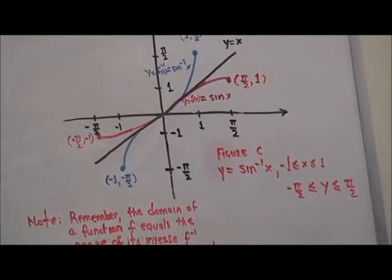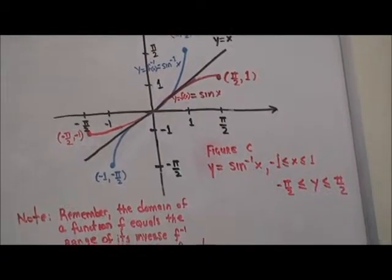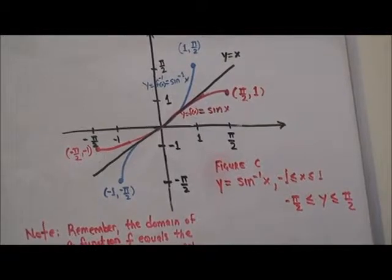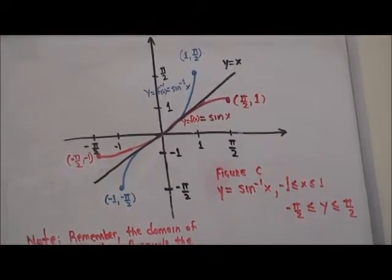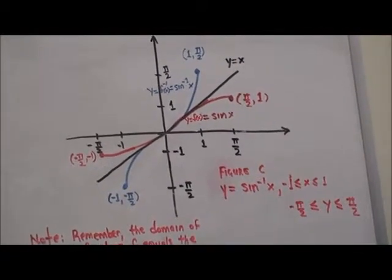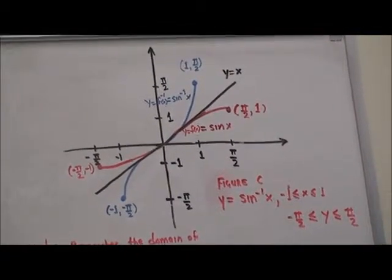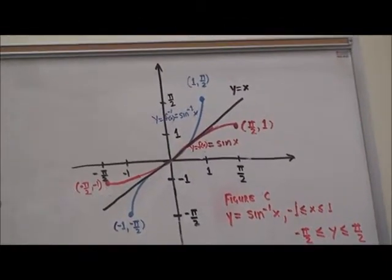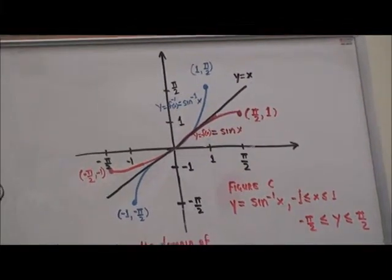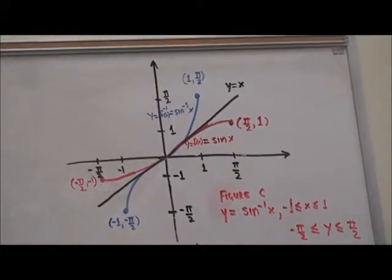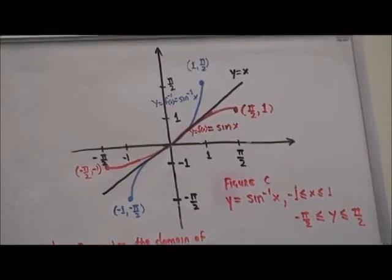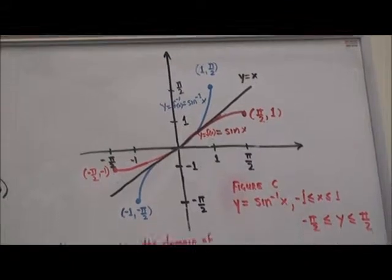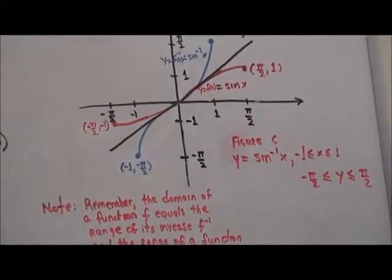The graph of the inverse sine function can be obtained by reflecting the restricted portion of the graph of y equals sine x about the line y equals x, as shown in figure C. That is very important.